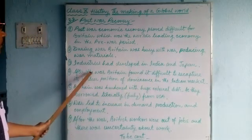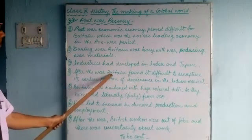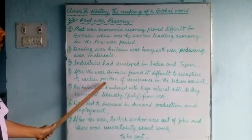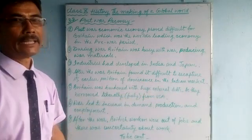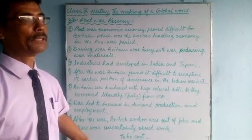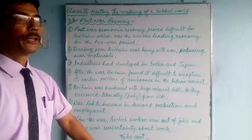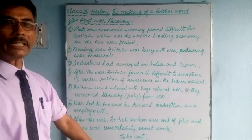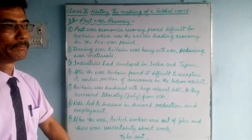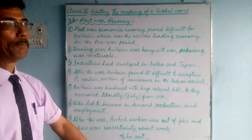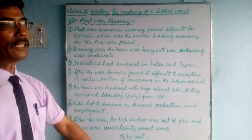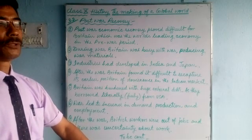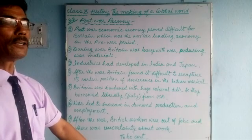Industries developed in India and Japan, giving India the opportunity to set up industries and produce these materials. After the war, Britain found it difficult to recapture its earlier position of dominance in the Indian market, where previously their products — especially cotton and mill goods — had flooded the market.